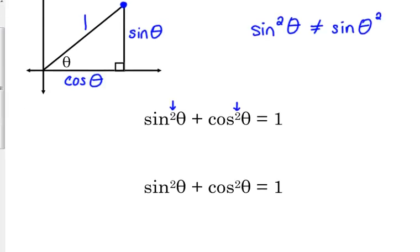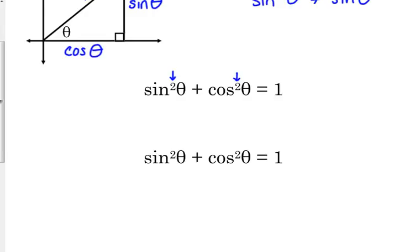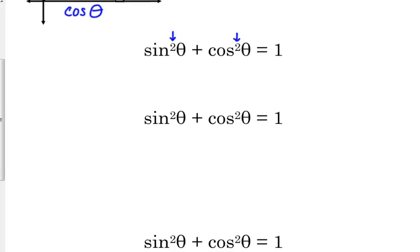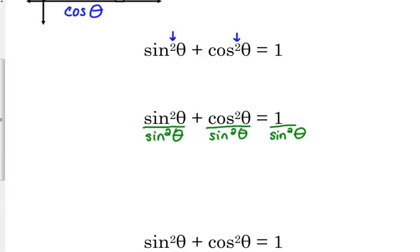There are actually nine different versions of the Pythagorean identity. We already know three of them. The first manipulation I'm going to do — and this may seem a little weird — is divide all terms by sine squared of theta. I can do that because I've divided every single term, so my equation is completely balanced. I've done nothing mathematically incorrect; I'm just manipulating.